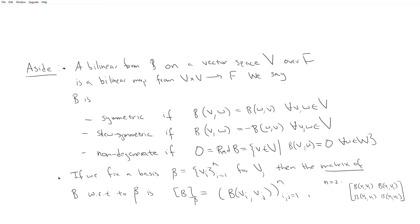Before we can look at types B, C, and D, we need to take a quick review of bilinear forms. I'm expecting that the viewer is familiar with the theory of bilinear forms — that should have been part of your adventures in linear algebra. So I'll just recap it a little bit. A bilinear form B on a vector space V over F is a bilinear map from V cross V into F, so it takes two vectors in V and sends them to some scalar in F.